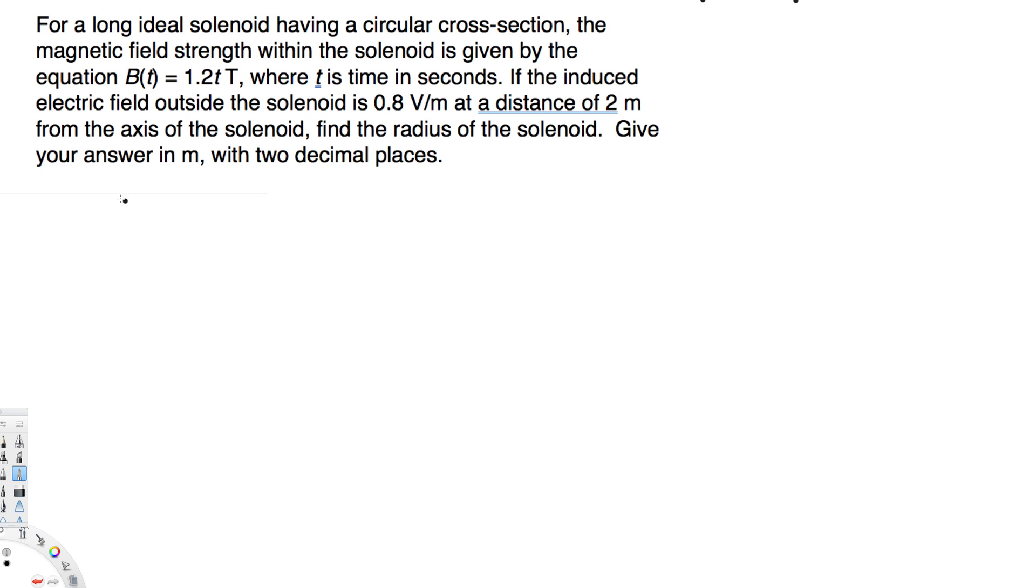Magnetic flux with respect to T is equal to integral of B dot dA. B is magnetic field, A is area. From this one we can derive our equation. We know that magnetic field is 1.2T, so 1.2T times the area. We are going to use cross-sectional area of the cylinder, that's going to be πR².